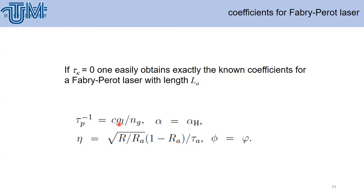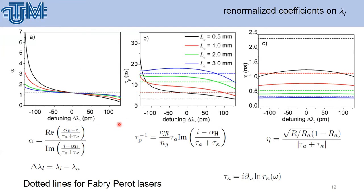Now let's look how these parameters depend on the detuning. You see here that for constant detuning, the value of alpha is equal to 1.2, this is the dotted line. When we change the length of the active region, the alpha factor depends on the detuning.